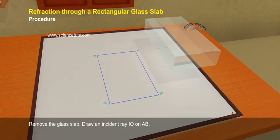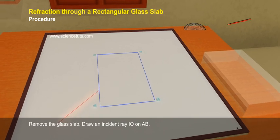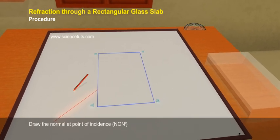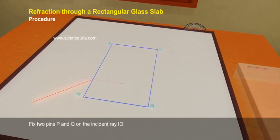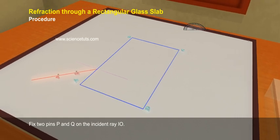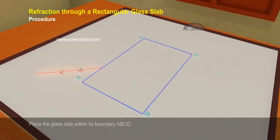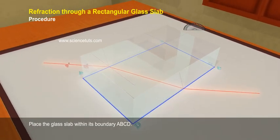Remove the glass slab. Draw an incident ray I.O. on A.B. Draw the normal at point of incidence N.O.N. dash. Fix two pins P and Q on the incident ray I.O. Place the glass slab within its boundary A.B.C.D.